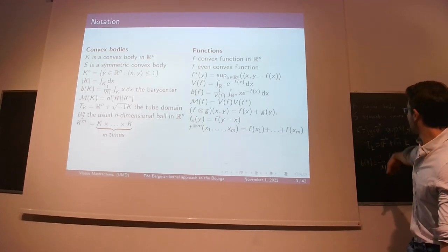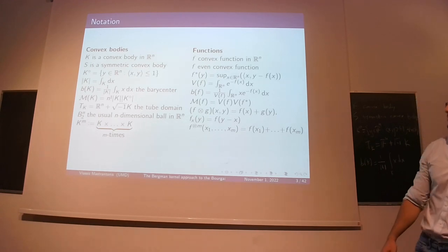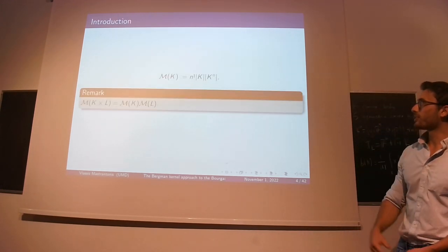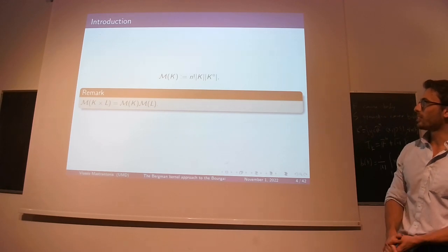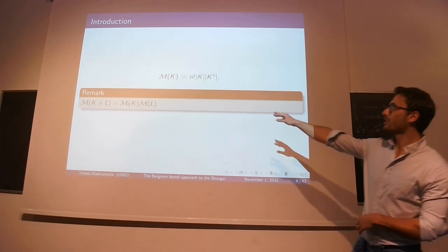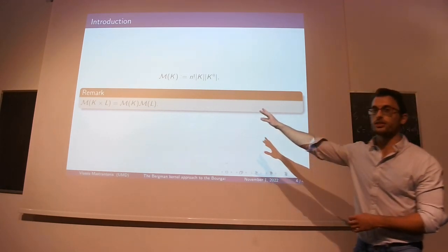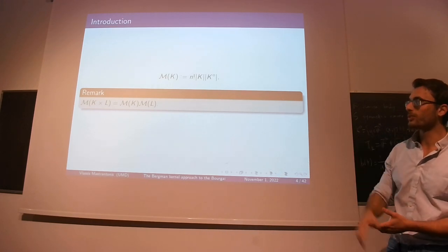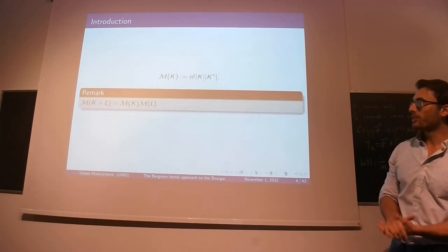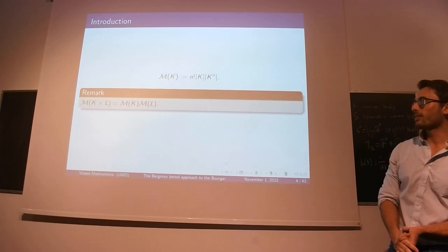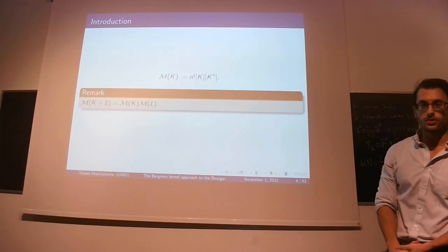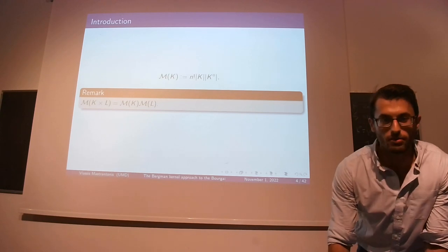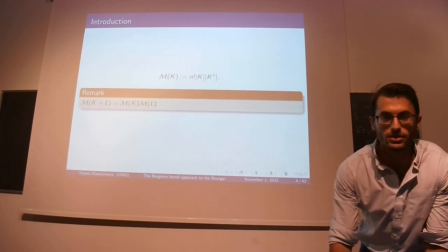I put the definitions here so that people can follow. In particular, I want to emphasize that for the Mahler volume, I'm going to use this n factorial here because this way it's multiplicative. So the Mahler volume of K times L is just the product of two Mahler volumes, so we don't have to worry about factorials.